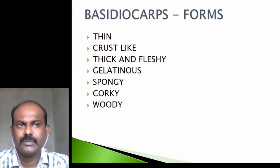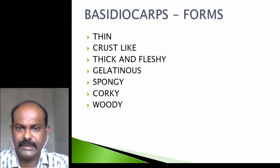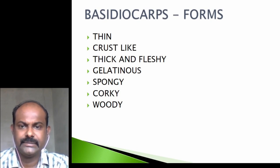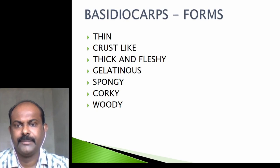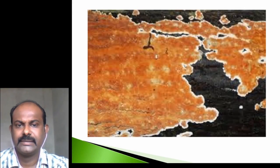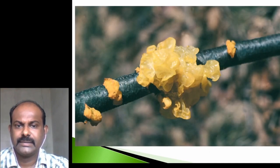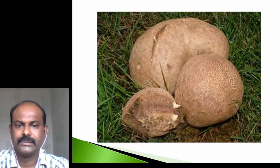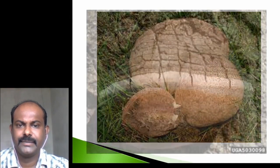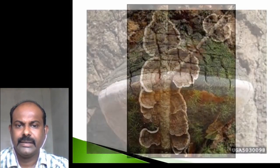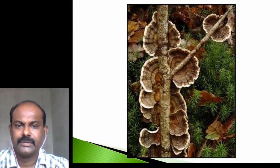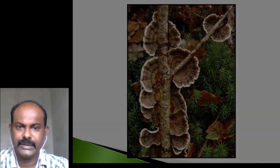Basidiocarps can come in different forms: they can be thin and crust-like, thick and fleshy, gelatinous, spongy, corky, or woody.